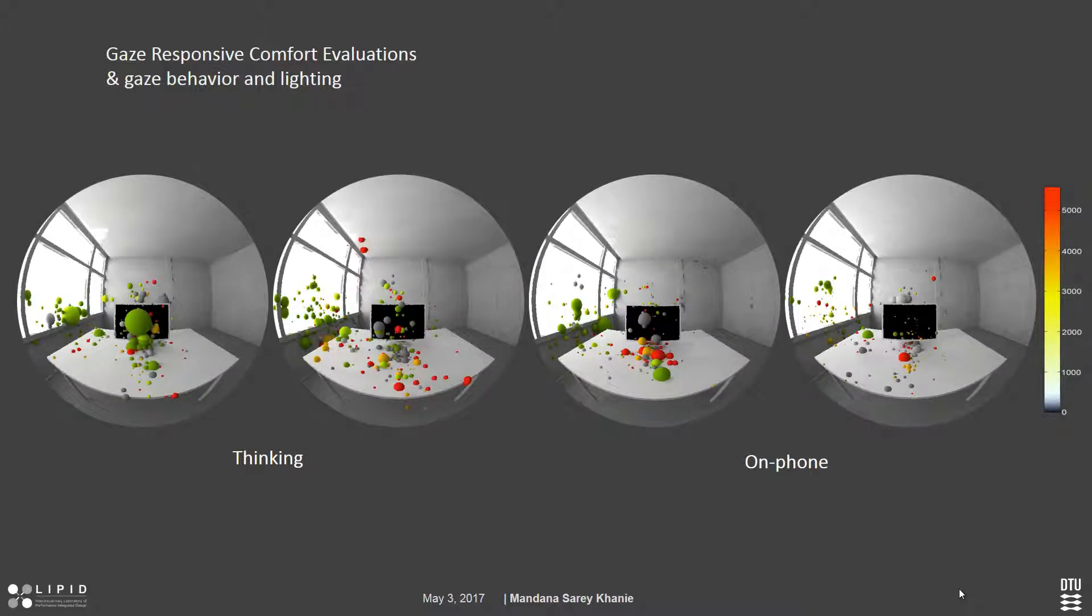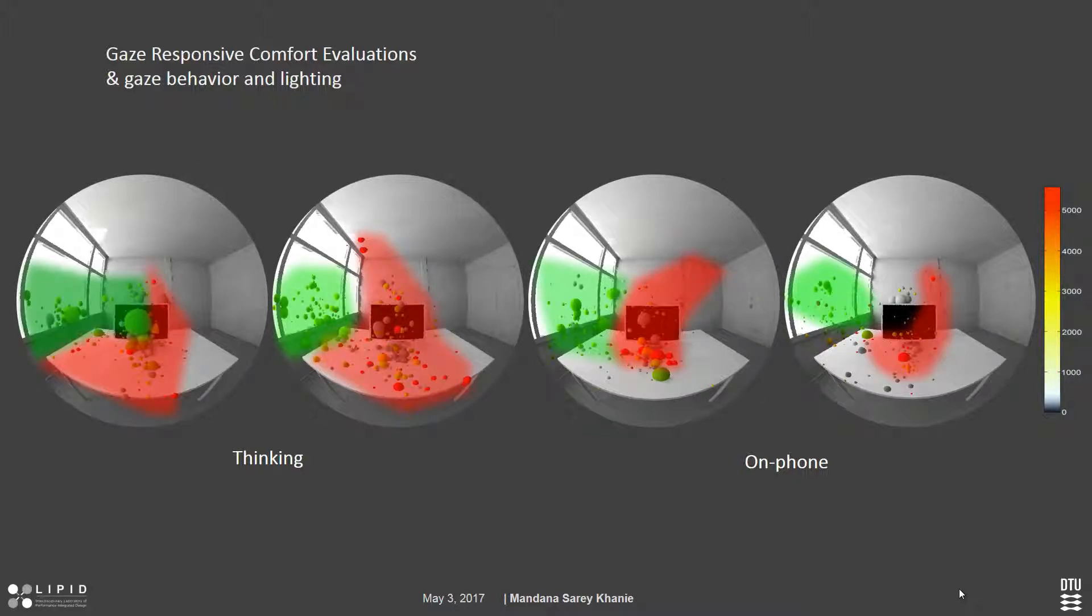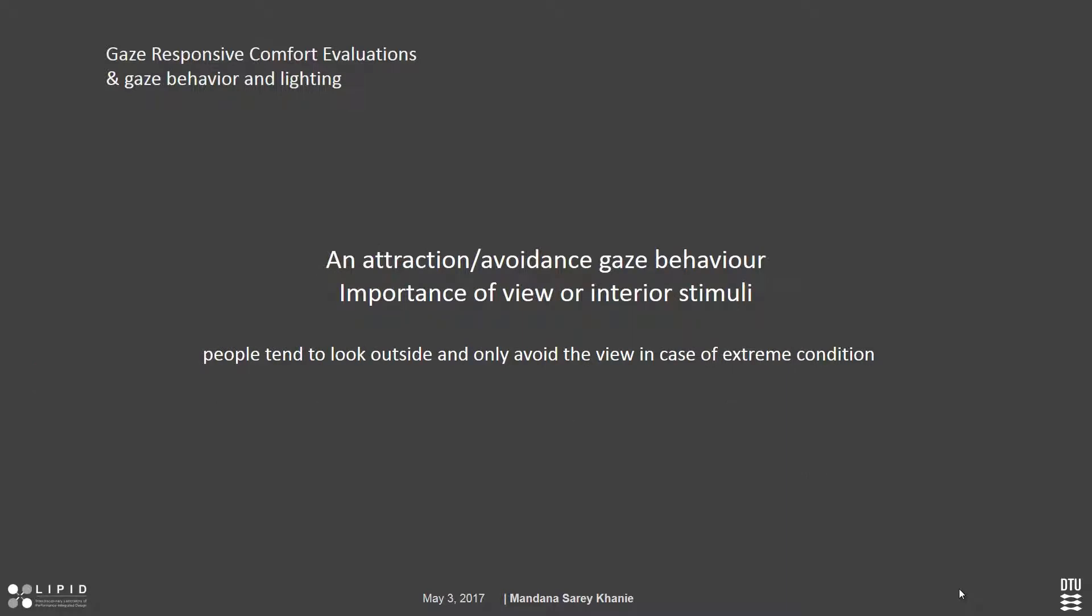And when it comes to different lighting conditions and view, we had these results. In these conditions, people were not working with a specific task. They were either thinking or they were on the phone. The behavior that we could see most was that most of our red dots, which is on the higher luminance level where they were exposed to glare, were falling inside the room. Whereas the green ones, which were light levels that were lower and bearable, they were always focusing outside. So what we could derive from that is that there is this attraction, avoidance gaze behavior, and also we could see the importance of view or any other kind of replacement of interior stimuli that could help people see or balance their gaze behavior.